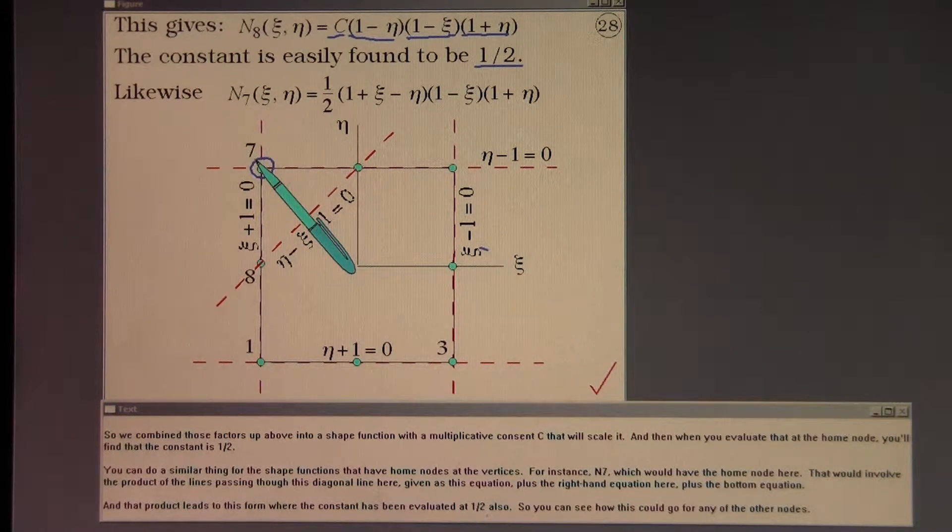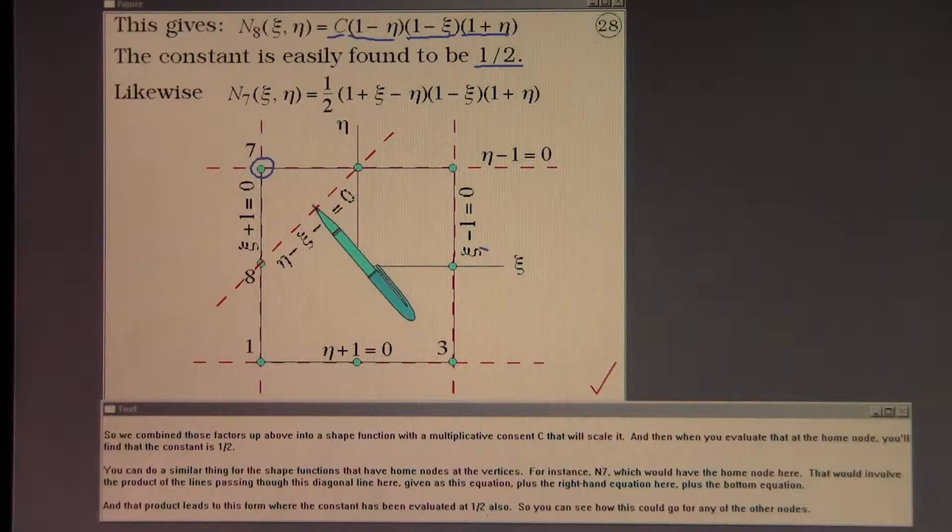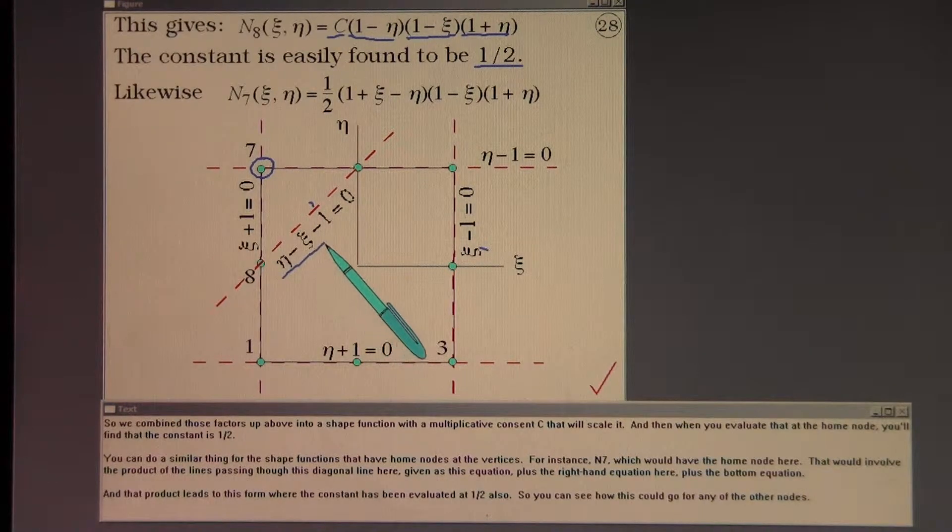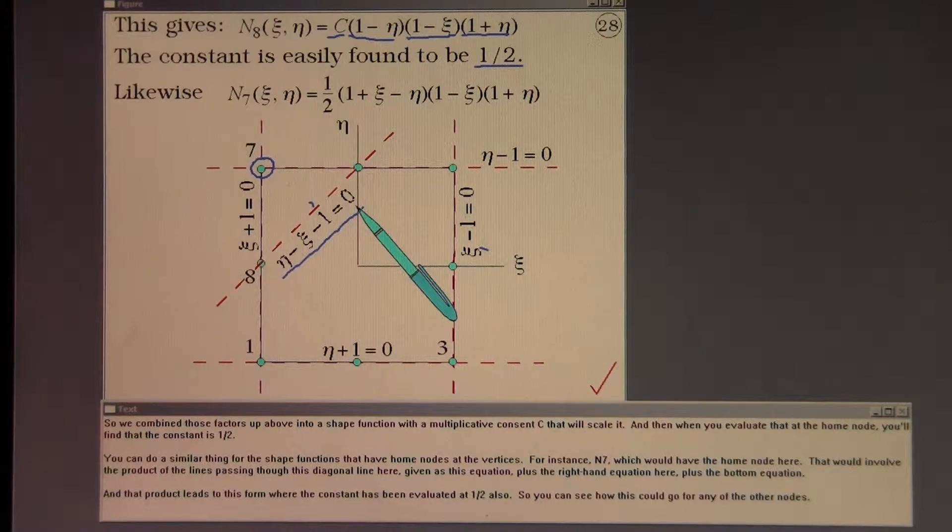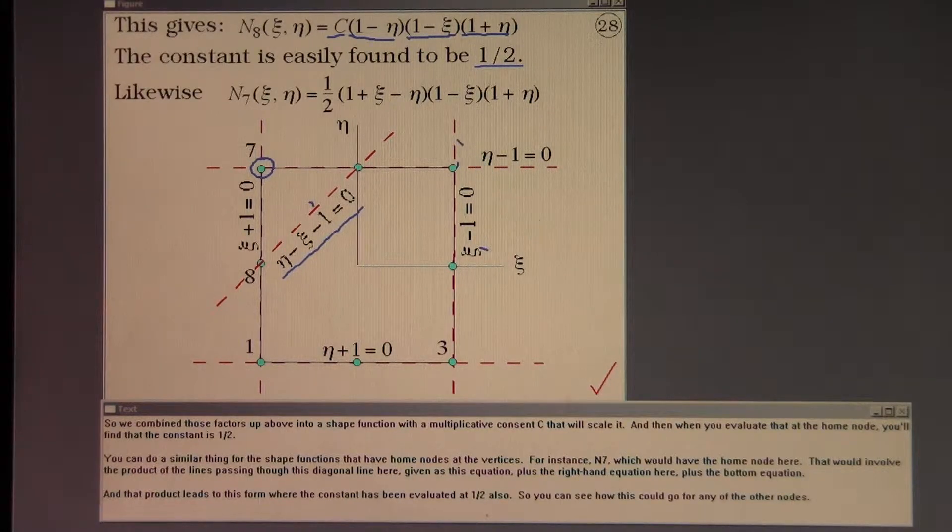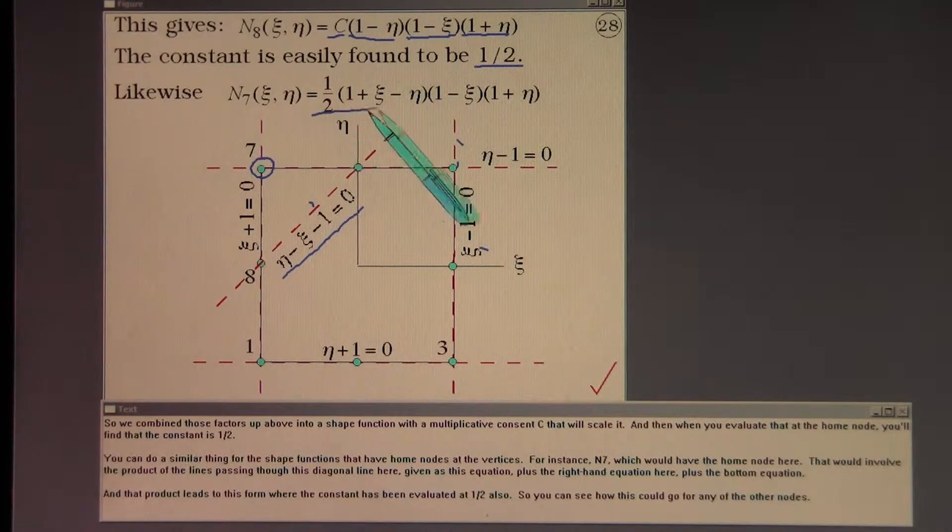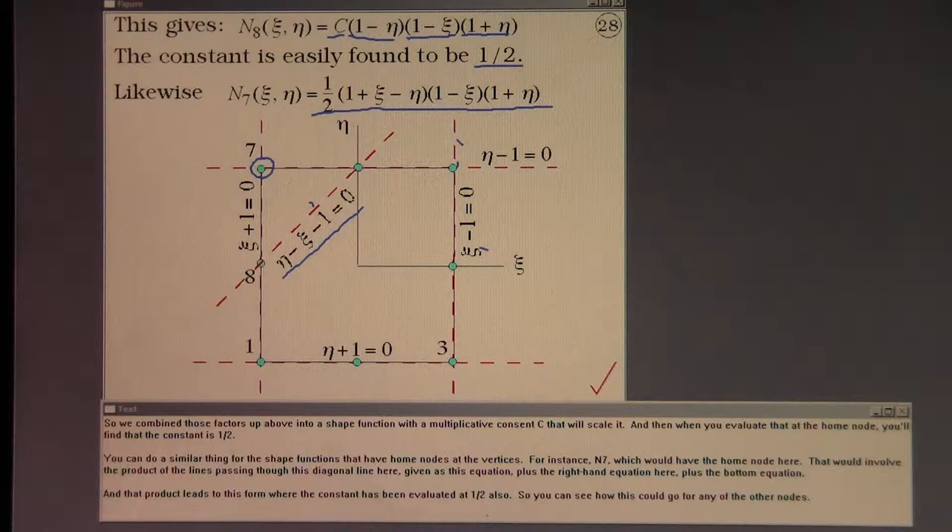For instance N7, which would have the home node here. That would involve the product of the lines passing through this diagonal line here given as this equation plus the right-handed equation here plus the bottom equation. And that product leads to this form where the constant has been evaluated at one-half also. So you can see how this could go for any of the other nodes.